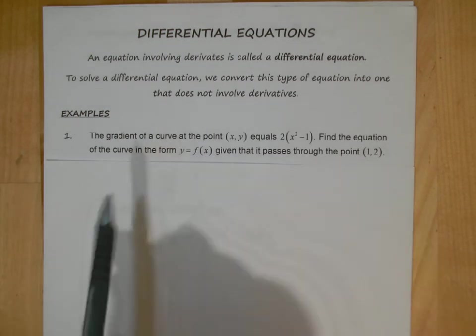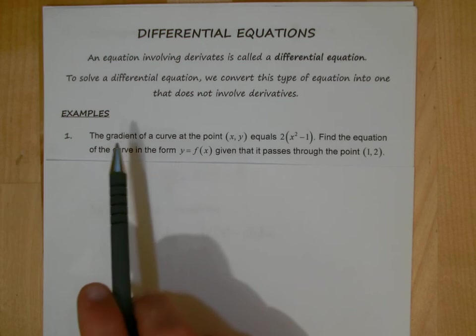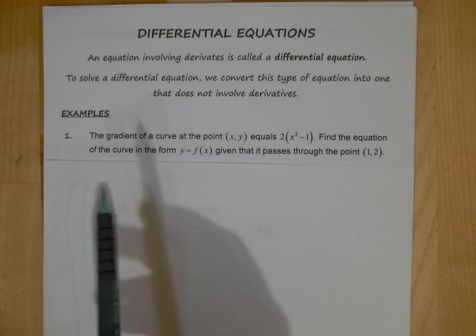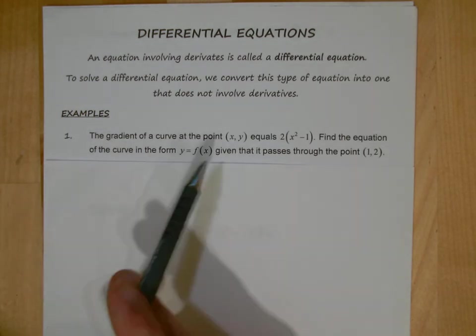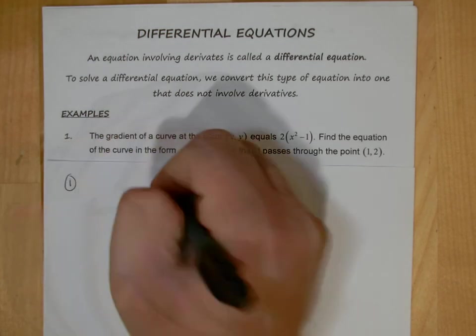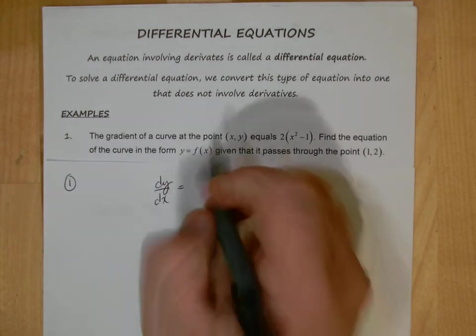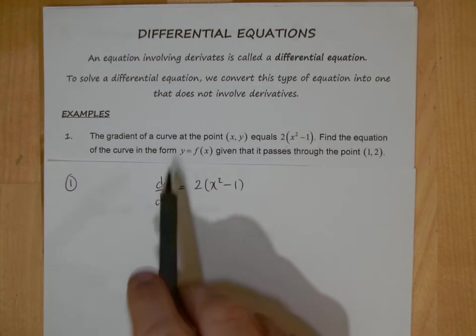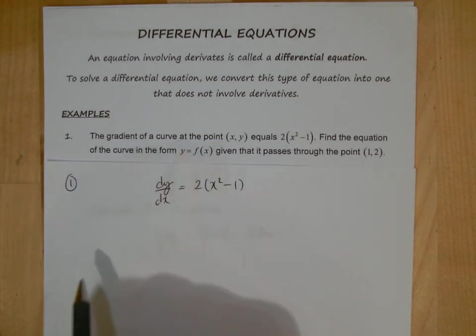So we're dealing with the variables x, y, and we're told that the gradient—now remember the gradient is looking at how the curve changes, the slope of the curve—and we tend to refer to that as dy/dx. That's what we think of the gradient as dy/dx. So what we can say here with number one is that dy/dx is equal to 2(x² - 1).